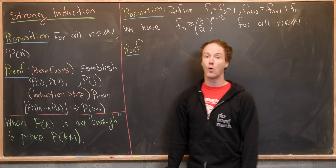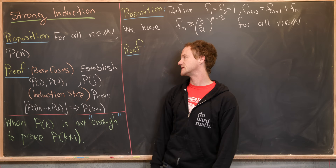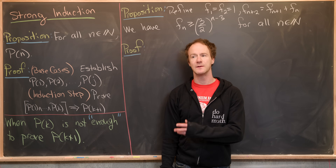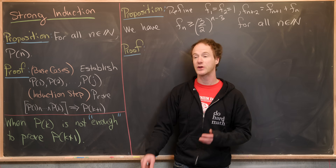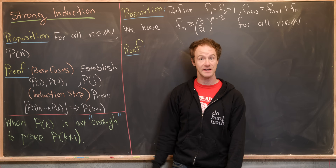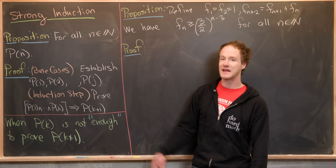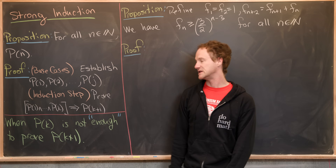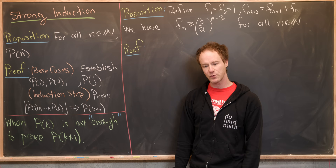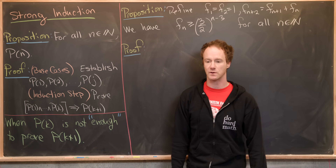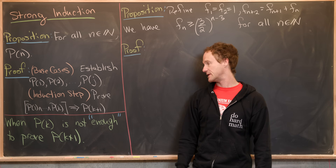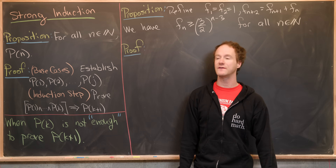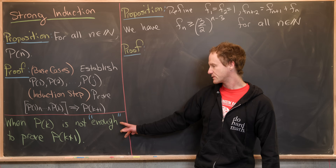We might have more than one base case. We want to establish the truth of p1, p2, all the way up to p_j, where j depends on the calculations in the induction step. The induction step is to prove that p1, p2, all the way up to p_k implies p_{k+1}. So instead of proving p_k implies p_{k+1}, you want to prove that all previous statements imply p_{k+1}.